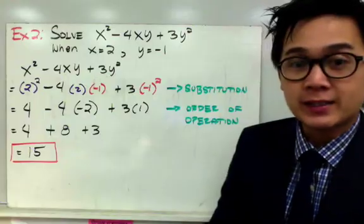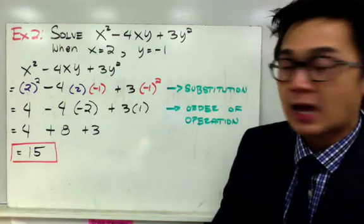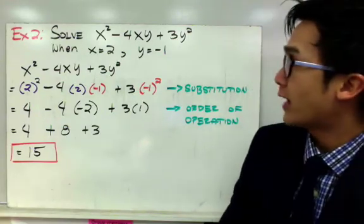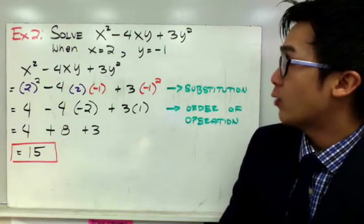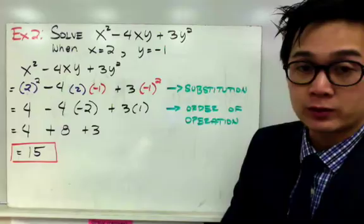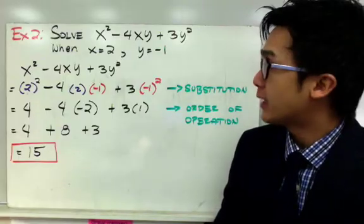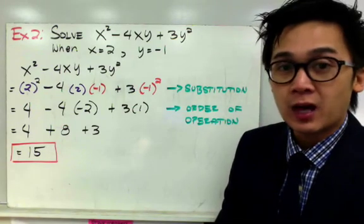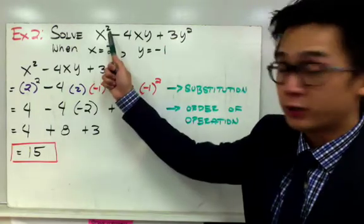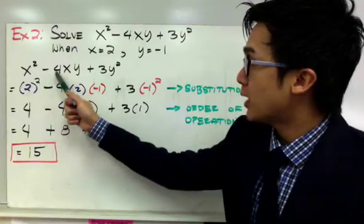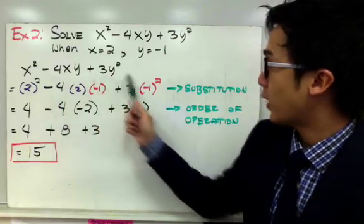Now for my next example, you will see exponents in our expression. So let's solve for x squared minus 4xy plus 3y squared, when x is equal to 2 and y is equal to negative 1. Now remember that when you see an exponent, it means you need to multiply that number by itself according to the number of exponent you have.